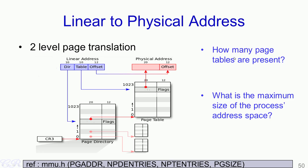I have two questions for you. One is: how many page tables are present in a 32-bit Intel system? The second question is: what is the maximum size of a process's address space? Given that each process has such a linear address to physical address mapping, find out what would be the maximum size of a process's address space.